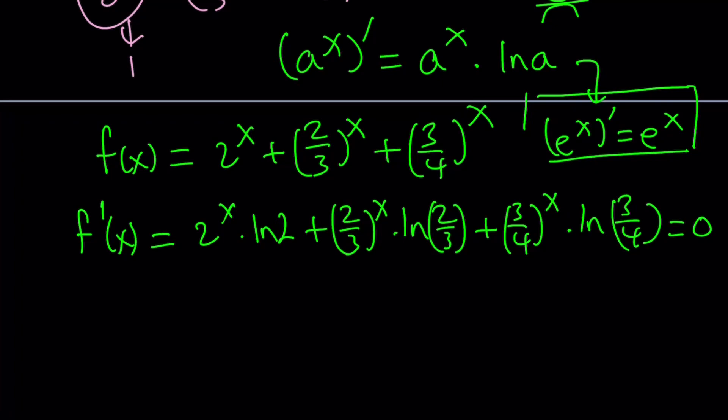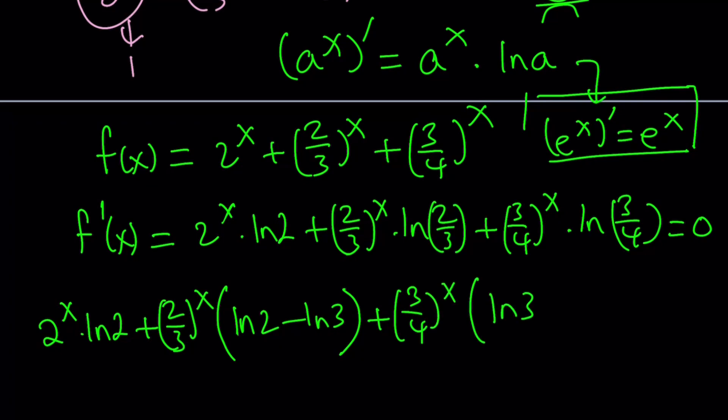But how do we manipulate this? Solving this equation for x would be insane, right? But actually, it's not that bad. Here's what we're going to do. Using properties of logs, we're going to simplify this. ln(2/3) can be written as ln(2) - ln(3) from the rule. And this one, same way, can be written as ln(3) - ln(4). And that's equal to zero. Great.